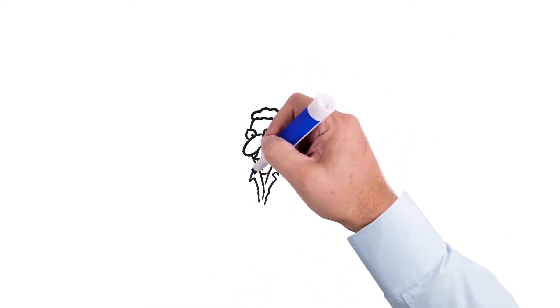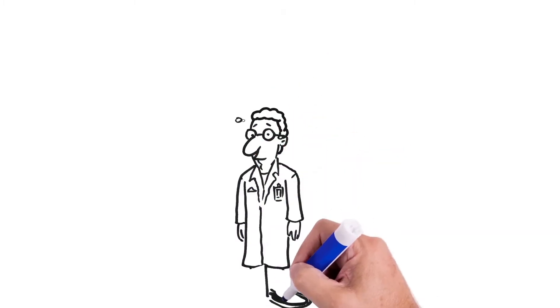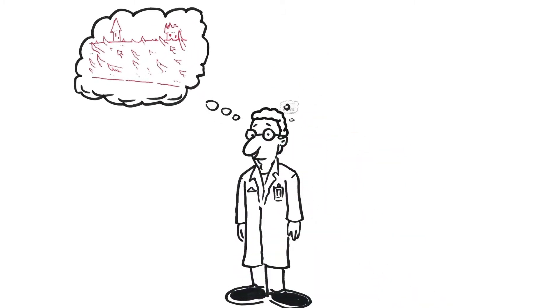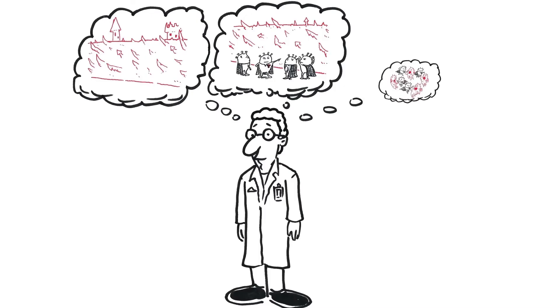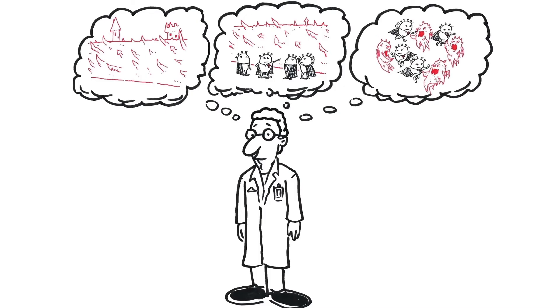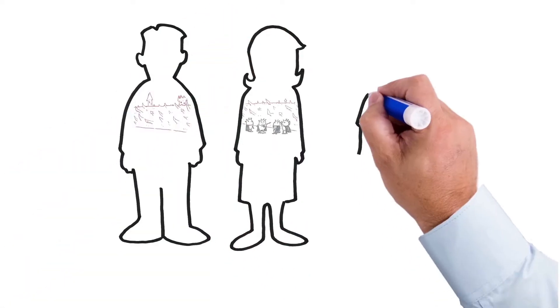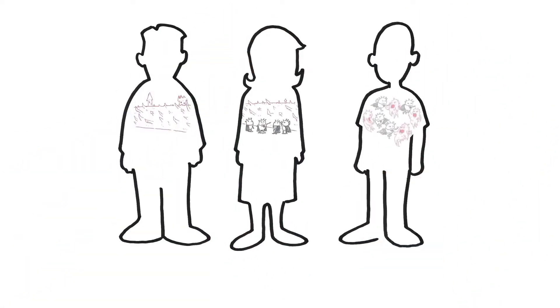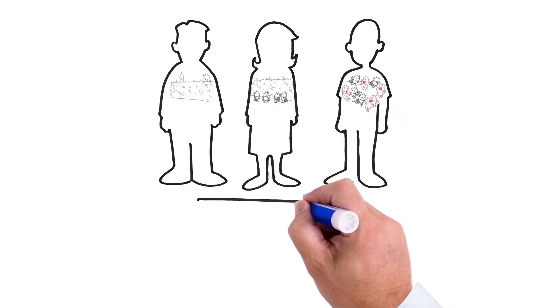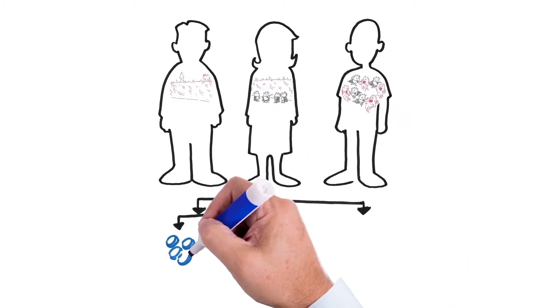Now, the importance of understanding that type of biology is that we can start to be very specific about what we are trying to do in any person that presents with one of these immune profiles. This allows us to apply different treatment strategies to target the individual immune biology, ensuring that the individual has the best chance of a response to a specific treatment.